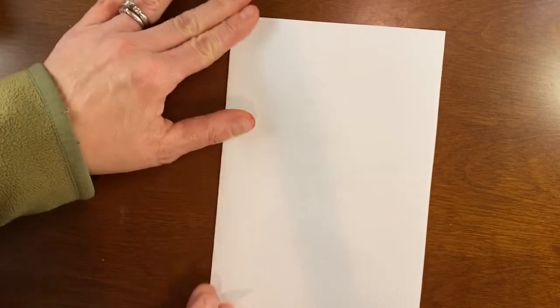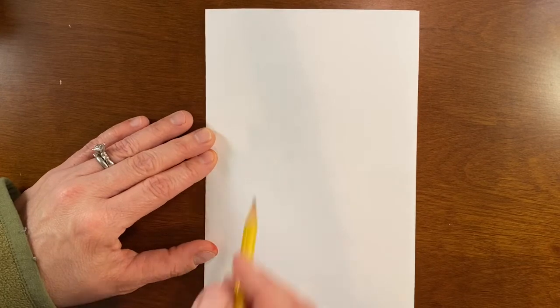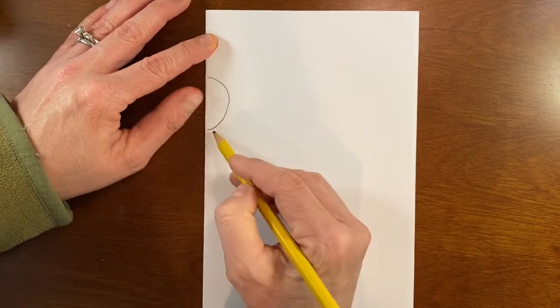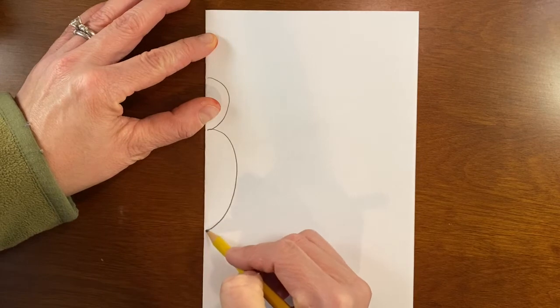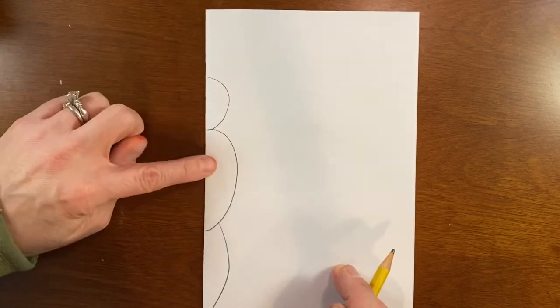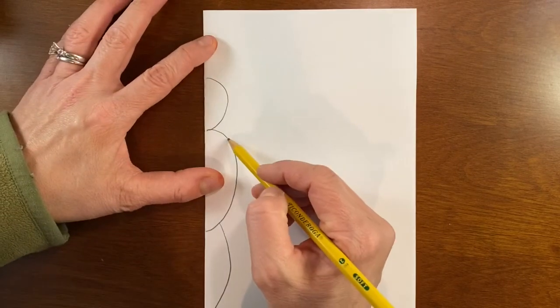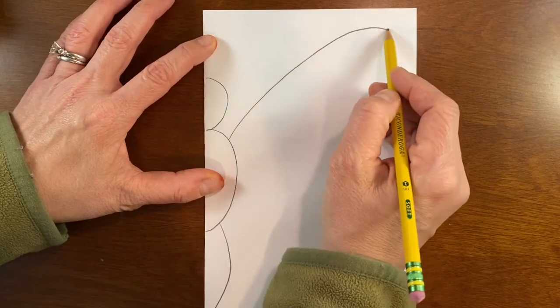Then we are going to start drawing half of a butterfly. So we're going to do half of a head, half of a thorax, and then half of an abdomen. Head, thorax, abdomen. Then we're going to do the forewing and I want you to go almost all the way to the edge of the paper.